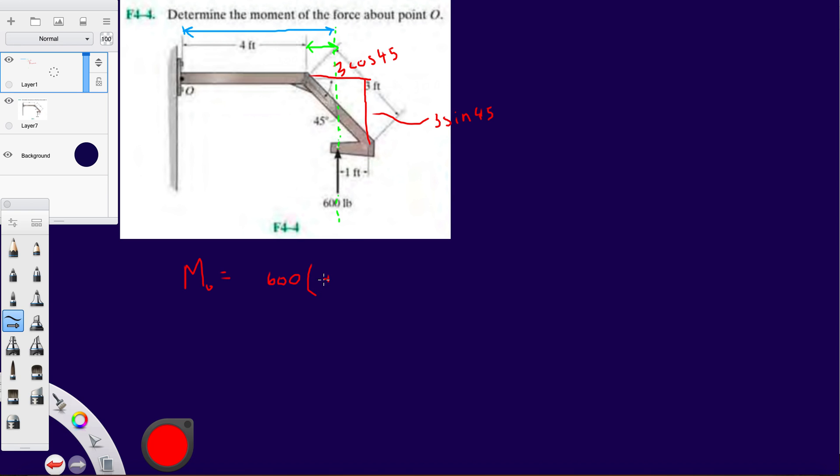So this is going to be 4 plus 3 cosine 45 minus 1 foot, because this whole length is 3 cosine 45, so 3 square root of 2 over 2.